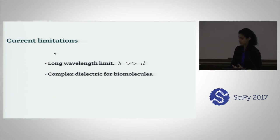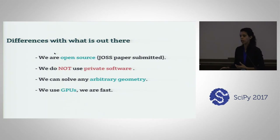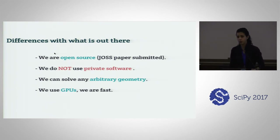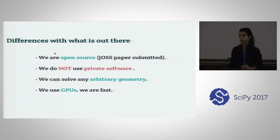We are different from what is out there. There are toolkits and private software that do similar things, but the main difference is that we are open source. We just submitted our JOSS paper for this application — it will be the second paper on PyBIE. To the best of our knowledge, we are the only fully open-source software that can solve arbitrary geometry in these kinds of applications. We also use GPUs, and we are fast because of that.